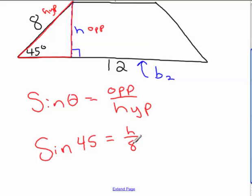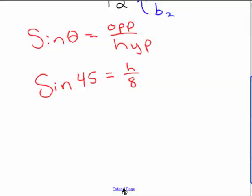Kind of remember all this stuff. So you take sine of 45 times 8, cross multiply, and sine of 45 times 8 is, H then is about equal to 5.66, you know, depending on how you want to round that. So we've got the height there.